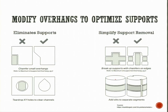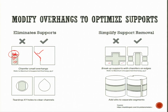Modify the overhangs to optimize the supports. For example, where a cantilever overhang requires a support, chamfering that overhang adds strength and reduces support material. Similarly, teardrop X-Y holes are used to clear channels. For simplified support removal, supports that are difficult to remove should be divided into different parts so they can be removed simply. Slits are also made to separate components — a proper delineation is put in between them.